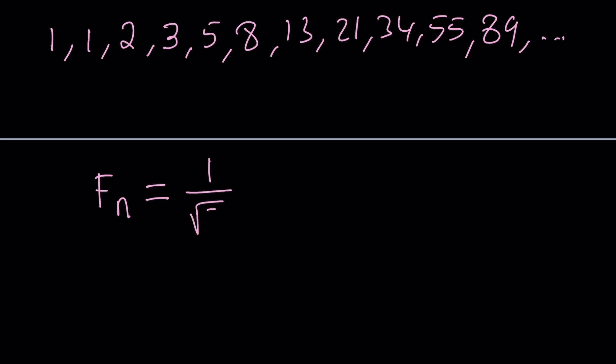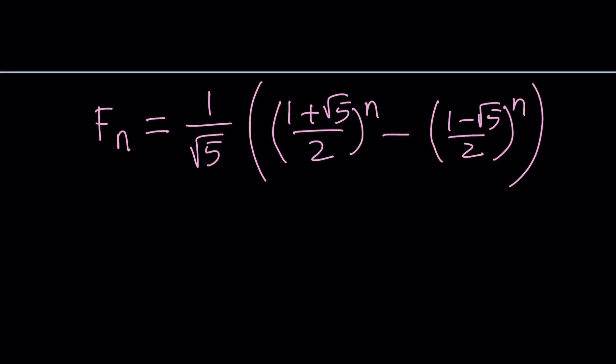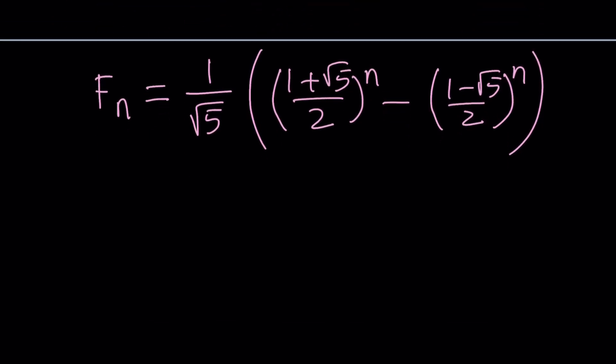The general term is given by 1 over the square root of 5, multiplied by: (1 plus root 5) over 2 to the power n, minus (1 minus root 5) over 2 to the power n. Where does the root 5 come from when all the Fibonacci numbers are integers? Well, if you raise these expressions to the nth power and do the work, you end up with integers. These two roots — (1 plus root 5)/2 and (1 minus root 5)/2 — actually come from a golden equation.